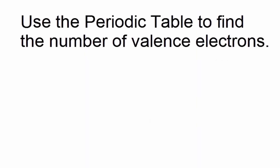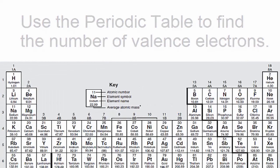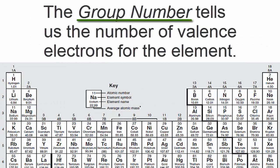We can find the number of valence electrons using the periodic table. The group number tells us the number of valence electrons for the element.